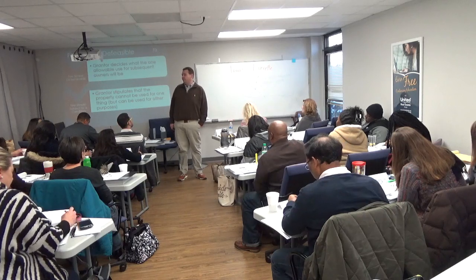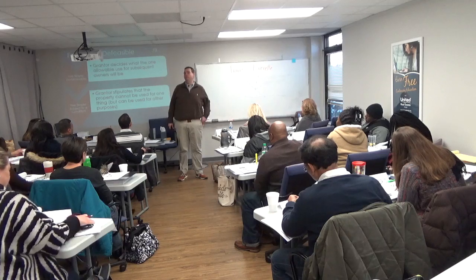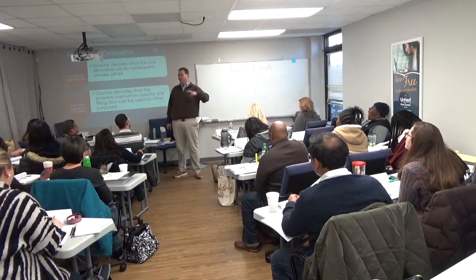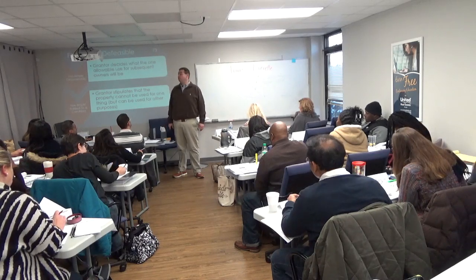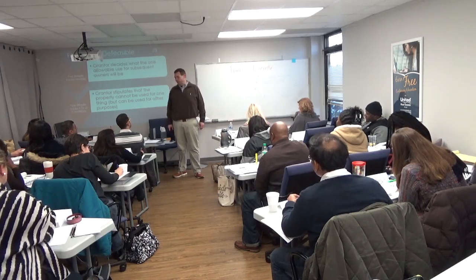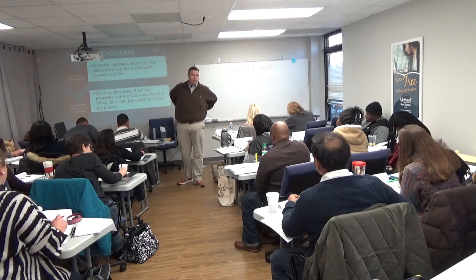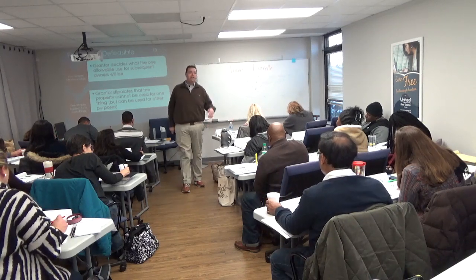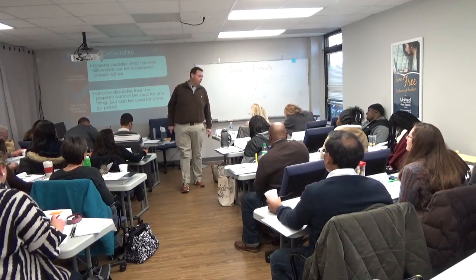Unlike life estates, which are destined to end at some point — whether it's a reversionary or remainder interest, they end up owning it fee simple absolute and all restrictions go away — these restrictions are appurtenant, which means they're going to last forever. Every subsequent owner, anyone they sell it to, gift it to, or pass it as inheritance, is going to have to honor these restrictions.